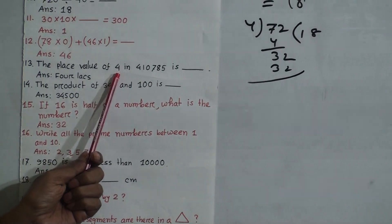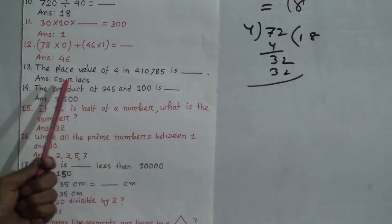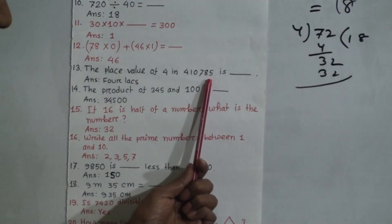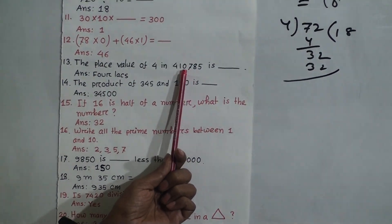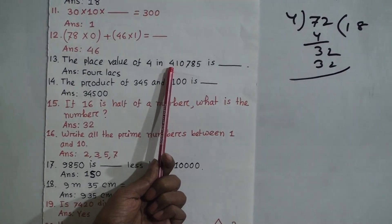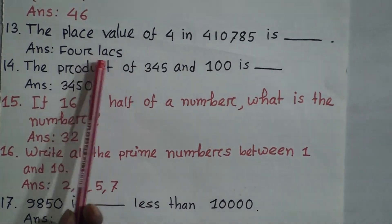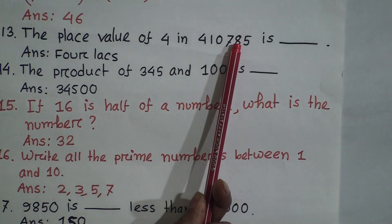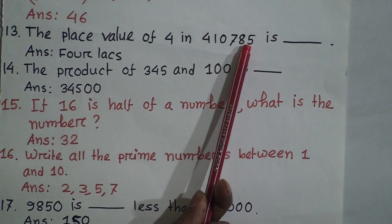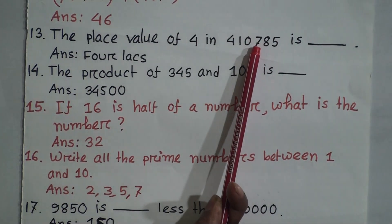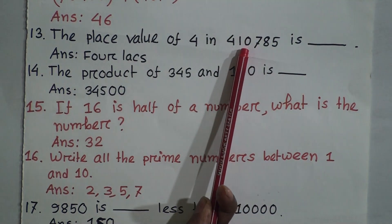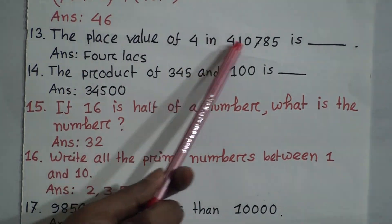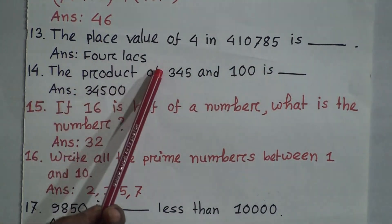Question 13: What is the place value of 4 in the number? Looking at the number: 5 is in the ones place, 8 is in the tens place, 7 is in the hundreds place, then thousands, 1 is in the ten-thousands place, and 4 is in the lakhs place. Therefore, the place value of 4 in this number is 4 lakhs.